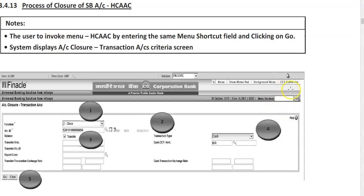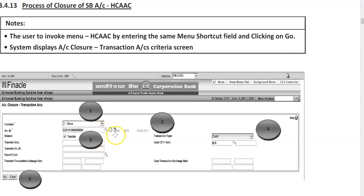Type this menu option in the menu shortcut on the right-hand side, click on Go or press Enter. The system displays the account closure transaction screen. On the right-hand side dropdown for 'Function', various options appear: Z is for close, V for verifying, M for modification. Enter the account ID from the customer's letter of request, or use the magnifying glass searcher to choose from the queue.